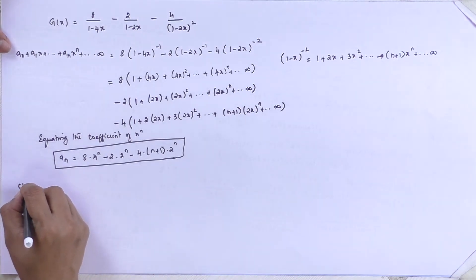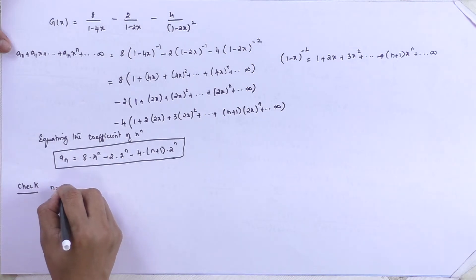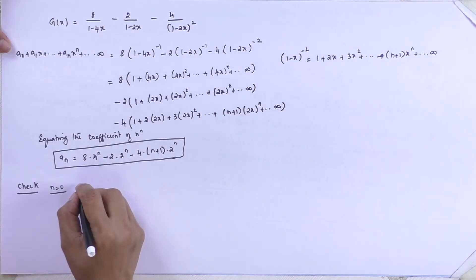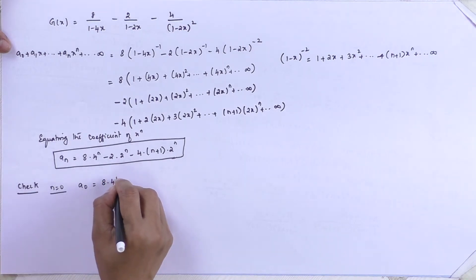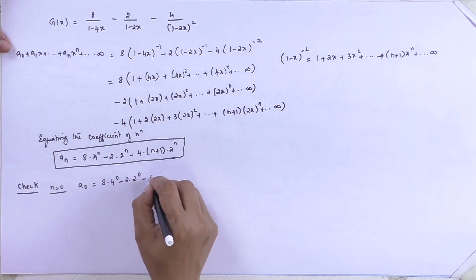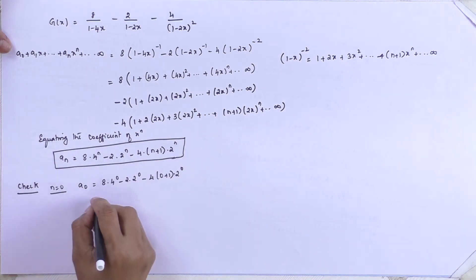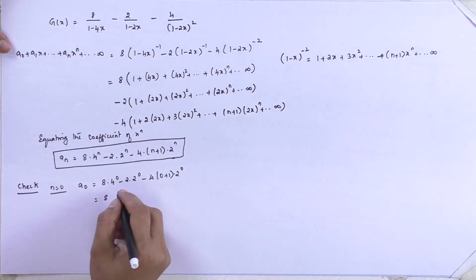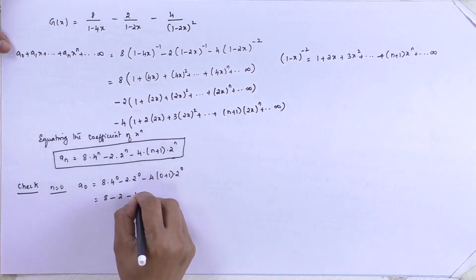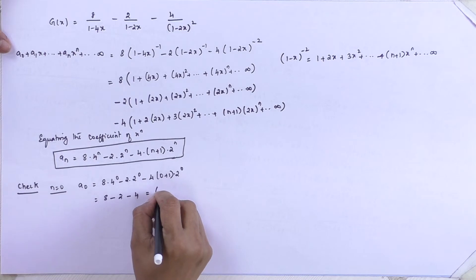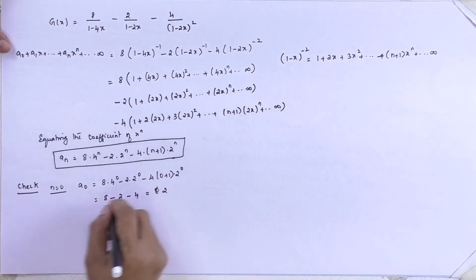If I want to cross-check the problem, let me substitute n as 0. So a_0 is equal to 8·4^0 minus 2·2^0 minus 4·(0+1)·2^0. Anything to the power of 0 is 1, so this gives 8 minus 2 minus 4, which is 8 minus 6, giving a_0 equal to 2.